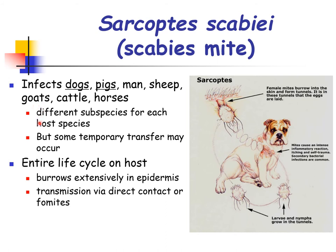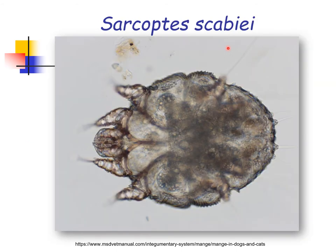Different subspecies of Sarcoptes scabiei infest each host species, but some temporary transfer may occur. For dogs we have Sarcoptes scabiei var. canis, and for pigs we have Sarcoptes scabiei var. suis. The mites of dogs may also temporarily infest humans, as can Sarcoptes scabiei var. suis. The entire life cycle is spent on the host. Sarcoptes scabiei is considered a burrowing mite, burrowing extensively into the epidermis. Transmission is via direct contact or via fomites.